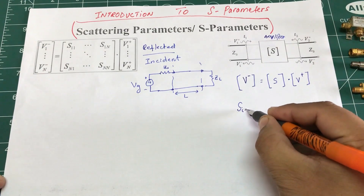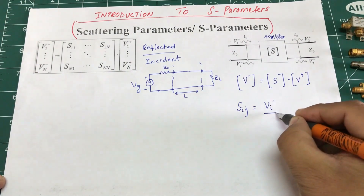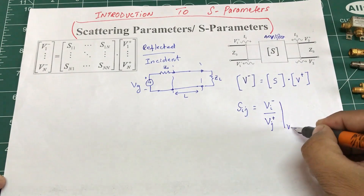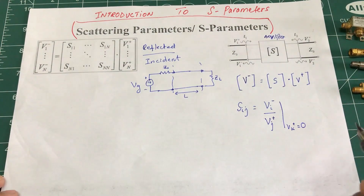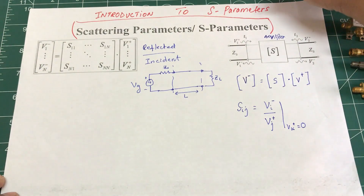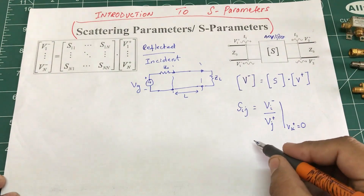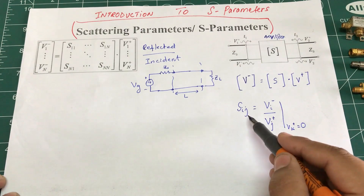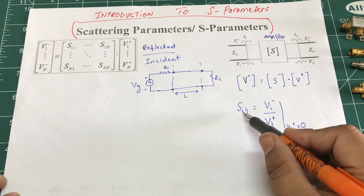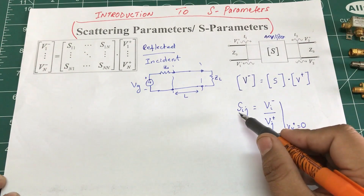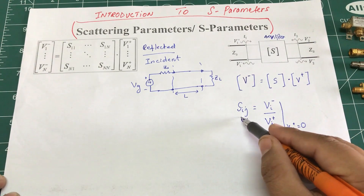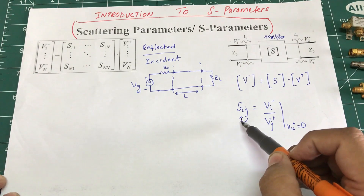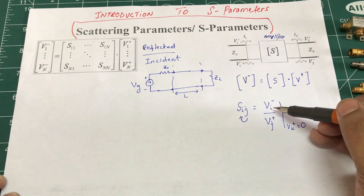We can generalize this: S_ij equals V_i minus over V_j plus, such that V_k plus equals zero. This is a very important distinction. S_ij tells us the S-parameter from port j to port i — note it is not from i to j, but from j to i. That is how you read the S-parameter notation.